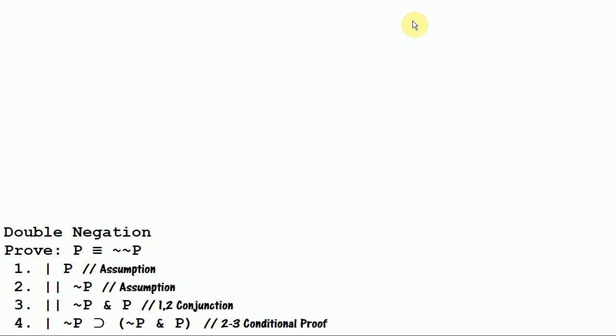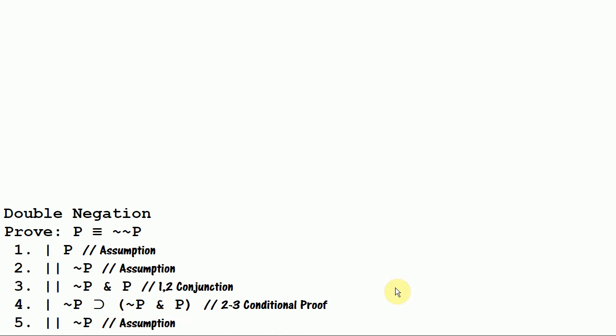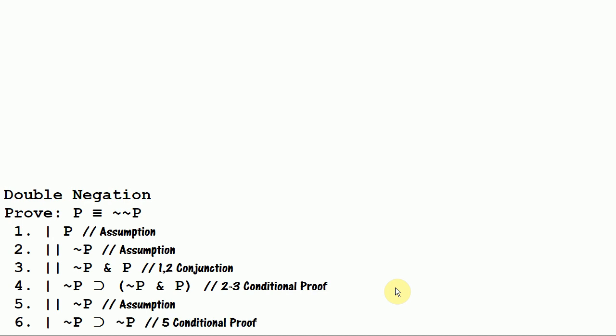And here's the interesting thing about this conditional — its consequent is false, and it can be proven to be false. So that's what I'm going to do now: I'm going to prove that not P and P is false, and then I'm going to use modus tollens to get not not P. So I make the assumption of not P here, and I immediately end that assumption, and I conclude through conditional proof from just that line: if not P, then not P.